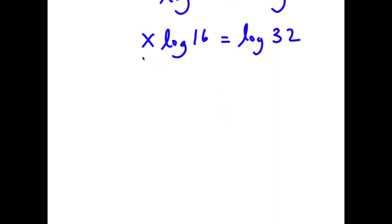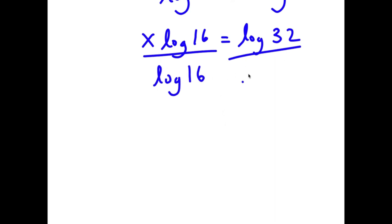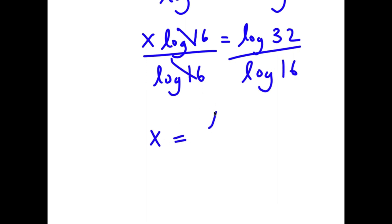Now I'm going to divide both sides by log 16. So these two cancel out and I have x is equal to log 32 over log 16.